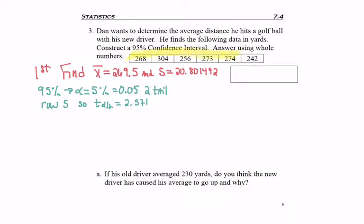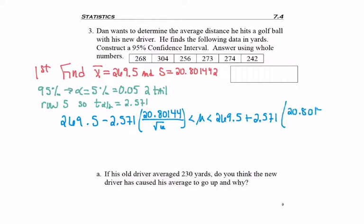I'm going to go to row five to find T alpha over two is 2.571. Notice we had six numbers in our data set, so we go to rows n minus one for degrees of freedom. And now I can go ahead and plug everything into my point estimate plus or minus my margin of error formula.